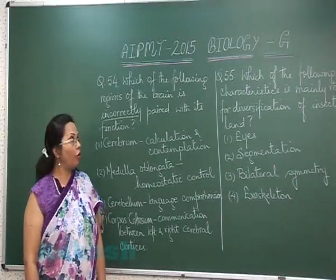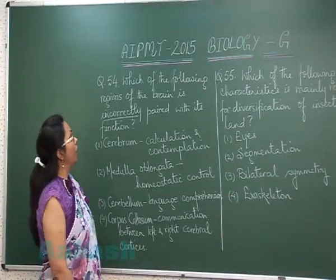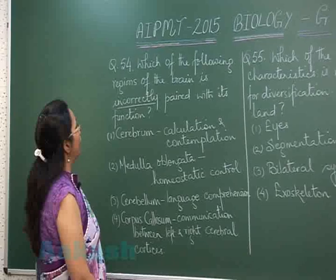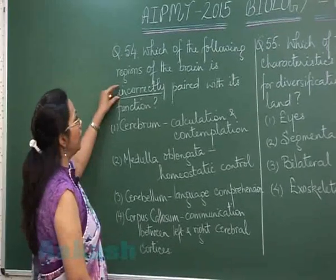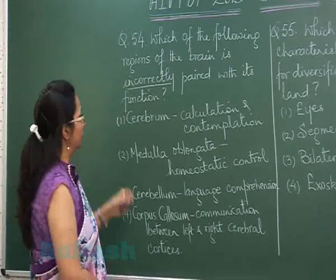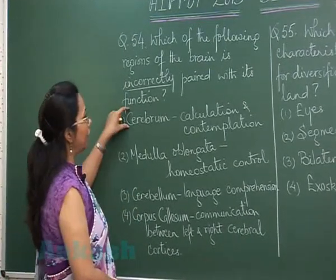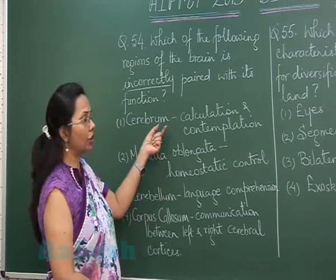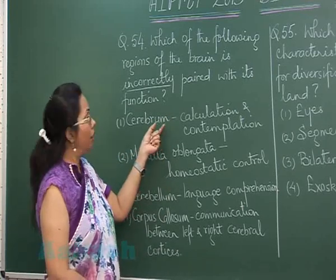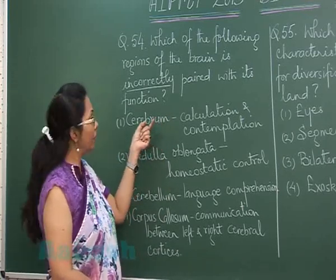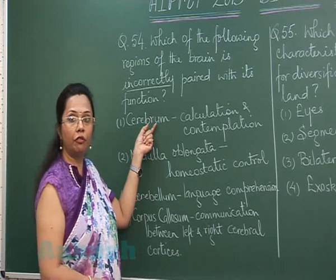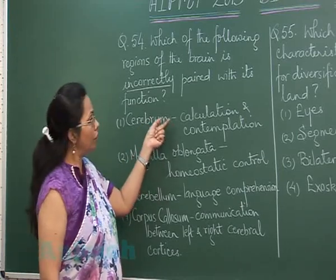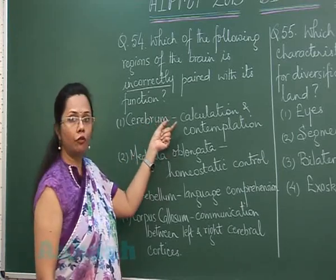Question 54: Which of the following regions of the brain is incorrectly paired with its function? Cerebrum — calculation and contemplation. That's correct, because the cerebrum is our seat of intelligence and all different types of thought arise from the cerebrum.